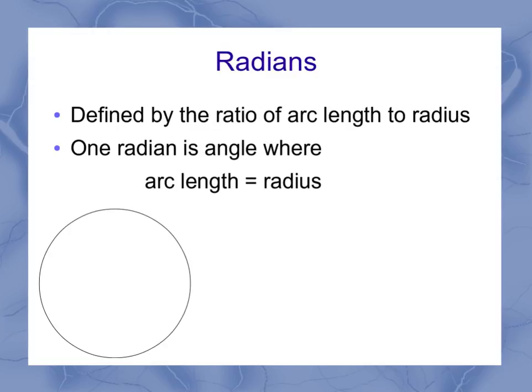So we start off with a circle, and we can define the radius of that circle. Then I start moving along that circle. And when I have gone a distance so that the distance along that arc is equal to the radius, that angle I'm measuring out is 1 radian. So it's the ratio between the arc length and the radius.